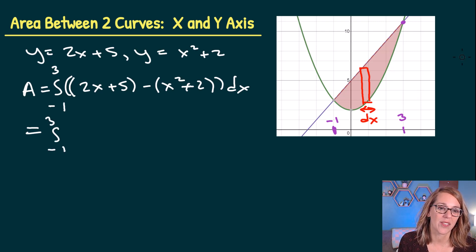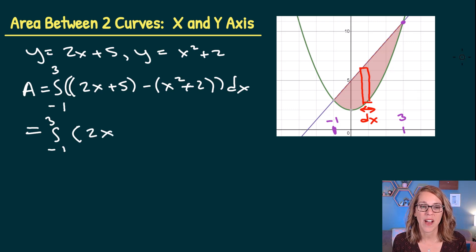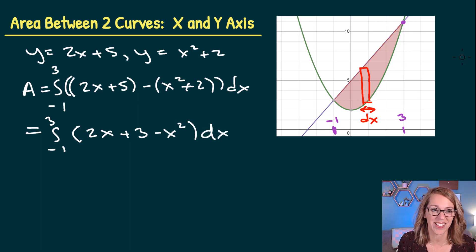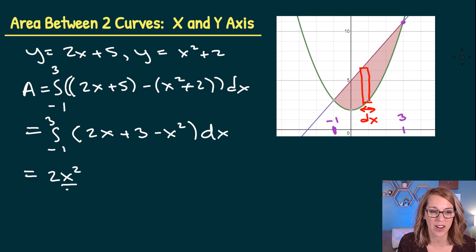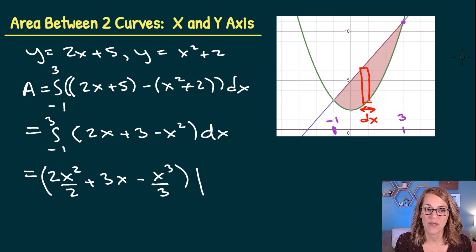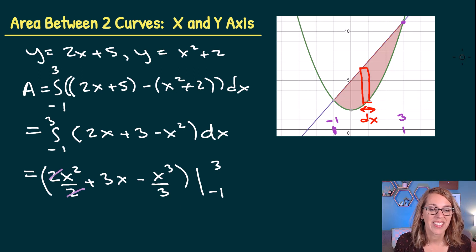Cleaning up the integrand: combining like terms from −1 to 3 gives 2x plus 3 minus x squared, dx. Using the power rule to integrate: 2x becomes 2x²/2, which simplifies to x²; integrating 3 gives 3x; and x squared integrated gives x³/3. Evaluating from −1 to 3, the 2s cancel to give x squared plus 3x minus x³/3.